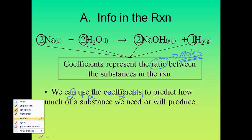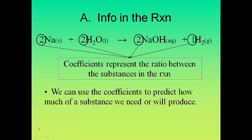So what we can actually do is use these chemical reactions and use these coefficients to predict how much of a substance will be produced in the chemical reaction. So let's jump into that now.